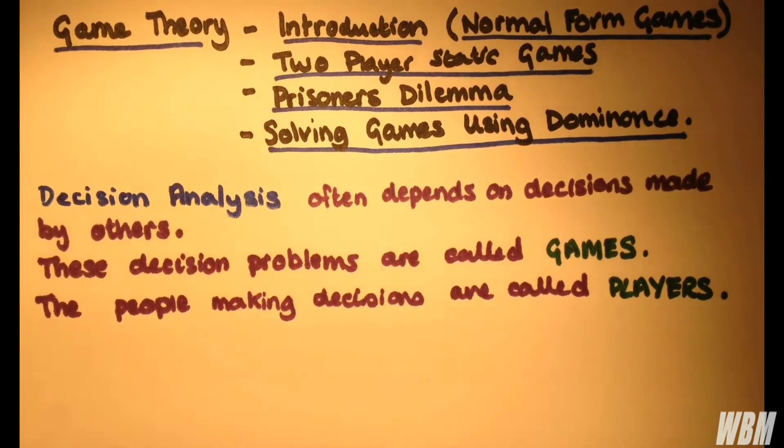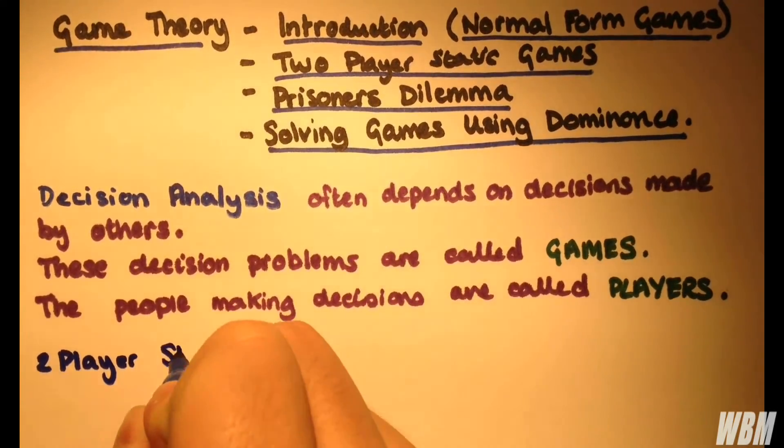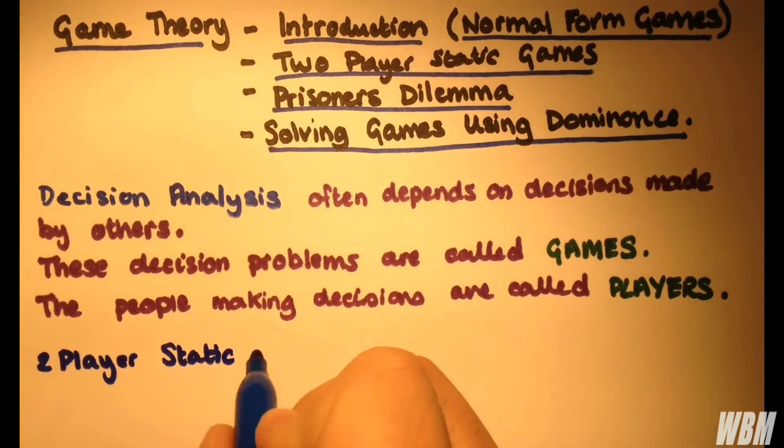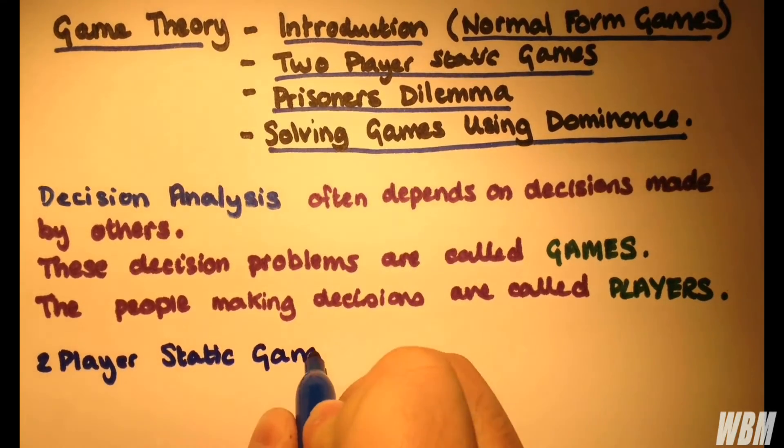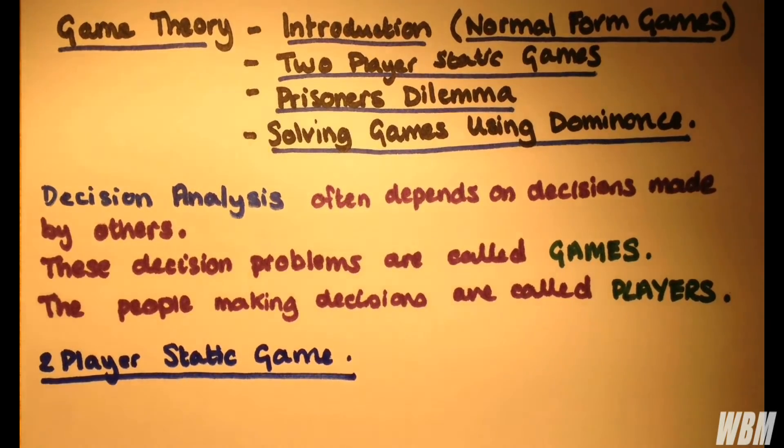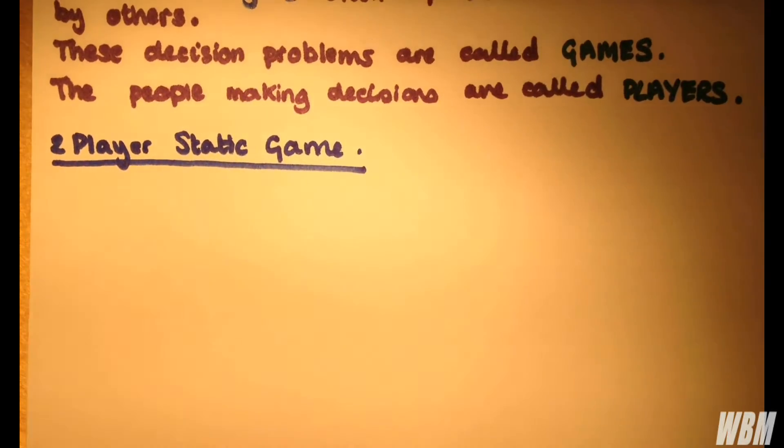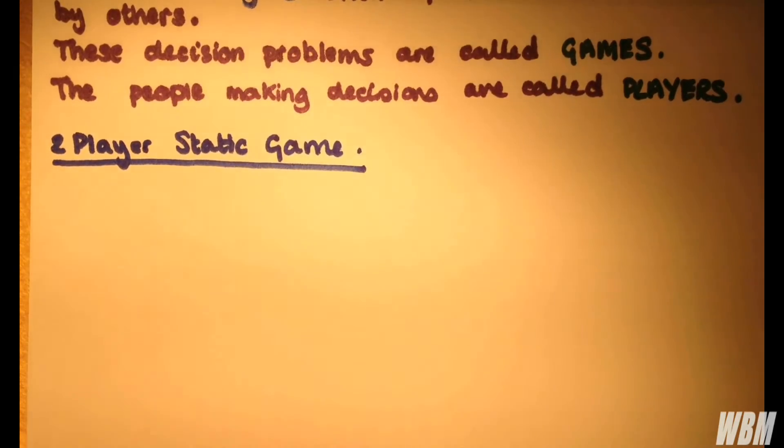So let's consider a two-player static game. In a two-player static game, we need to consider two players, two people making decisions. And we assume that each of them have a set of strategies.